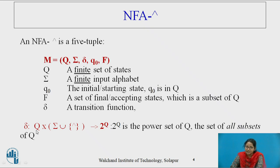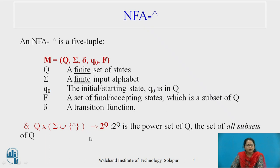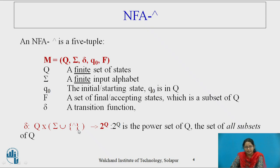In DFA, the machine in any state, by processing a single symbol at a time, moves to or remains in the same state Q. In NFA, the machine moves to 2 raised to Q — the power set of Q — that is the set of all subsets of Q. In NFA with null, the null symbol is included into the alphabet. By processing null, the machine moves to a new state or remains in the same state.